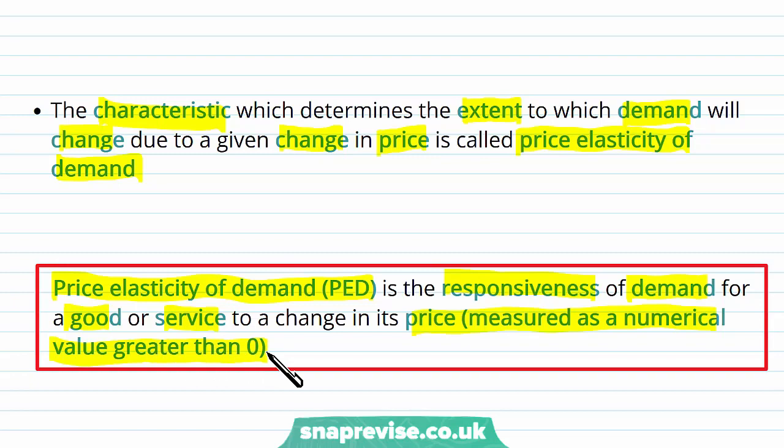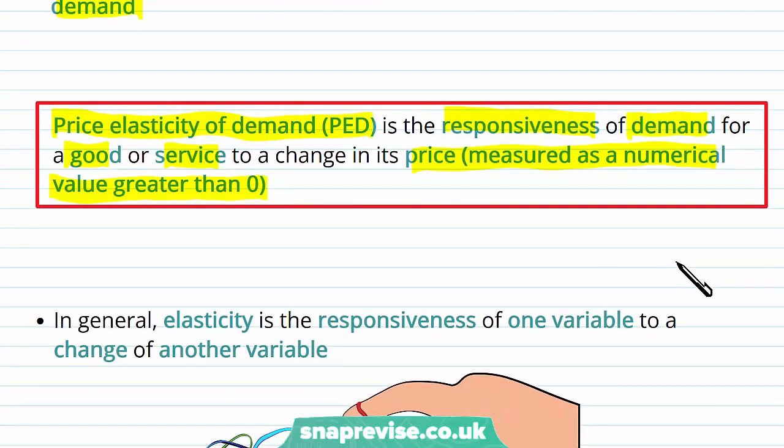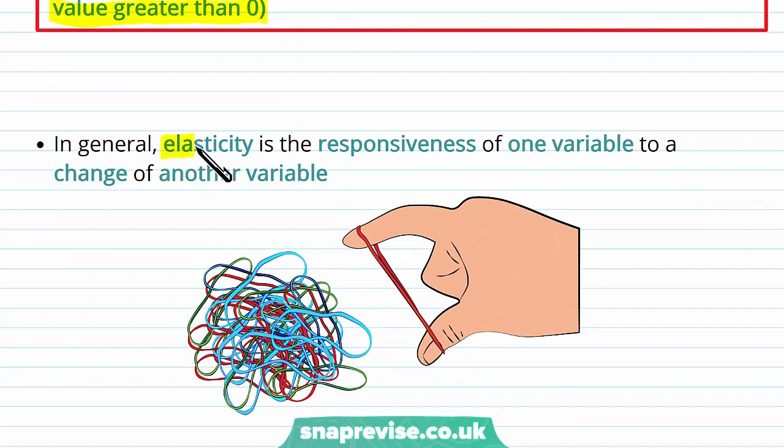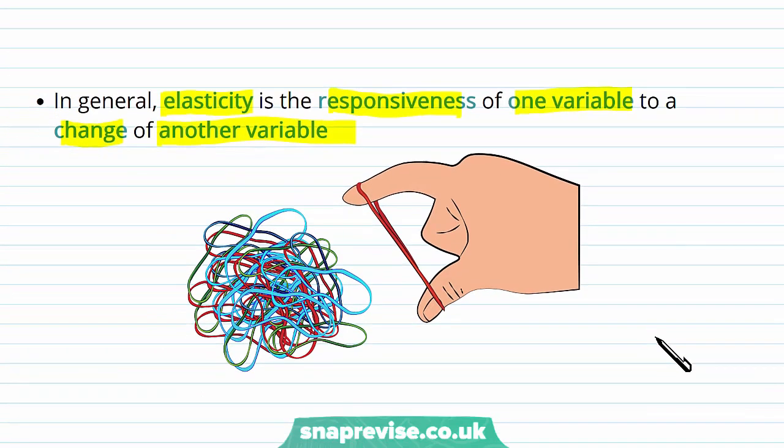To determine PED, we're going to be looking at some maths. In general, the elasticity is seen as the responsiveness of one variable to a change of another variable. That's where we're talking about the bread, where once we change the price, that's the variable we're changing. We're going to see how much demand, our second variable, changes, and we see that it doesn't change very much. On the other hand, we have the ring where there is a change in the price, but then we see a very vast change in the demand for rings.